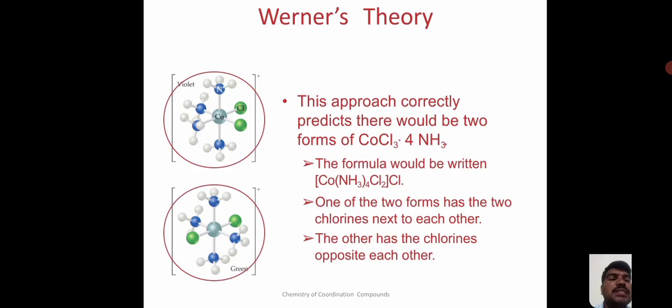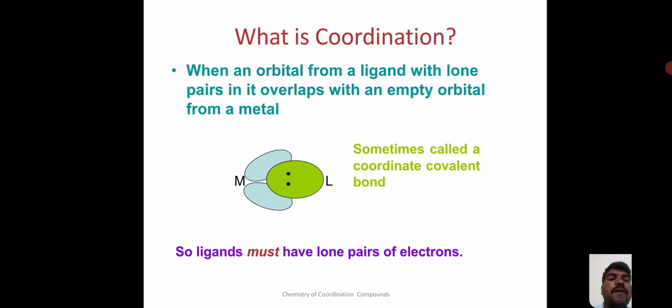What is coordination? When an orbital from the ligand with lone pairs in it overlaps with an empty orbital from the metal. Sometimes the bond will be called a coordinate-covalent bond. So, ligands must have lone pair of electrons.